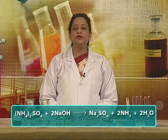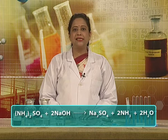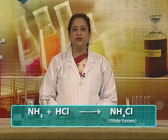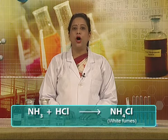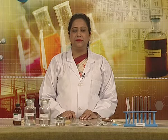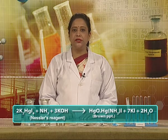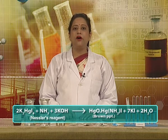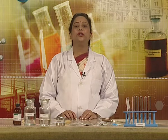On heating an ammonium salt with NaOH solution, ammonia gas is evolved, which produces white fumes of ammonium chloride on coming into contact with dilute HCl. When ammonia gas is passed through Nessler's reagent, a brown coloration or precipitate of basic mercury(II) amido iodine complex is formed.